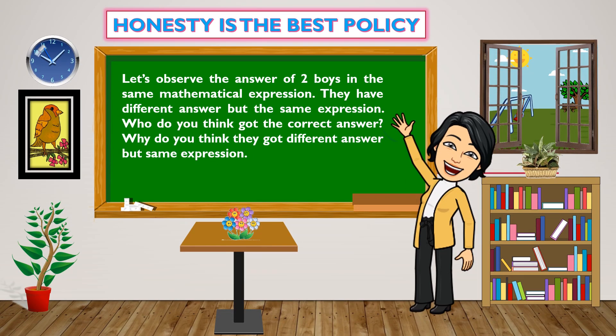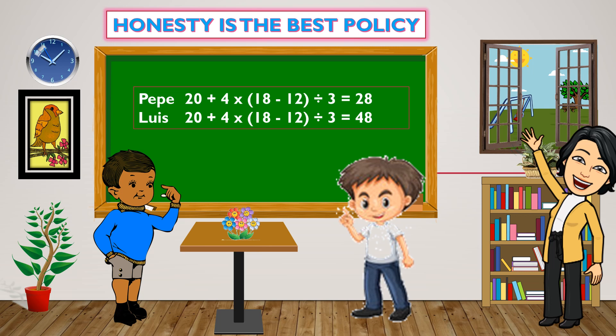Let's observe the answer of two boys in the same mathematical expression. They have different answers but the same expression. Do you think who got the correct answer? Why do you think they got different answers with the same expression? The equation is 20 plus 4 times 18 minus 12 divided by 3. The answer of Pepe is 28 while Luis is 48. Who got the correct answer?